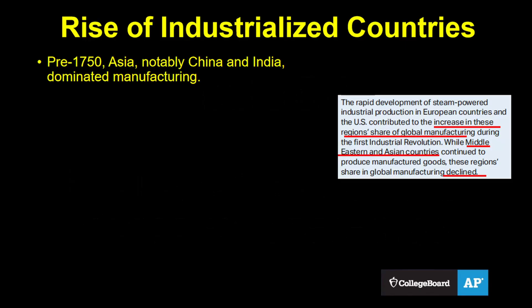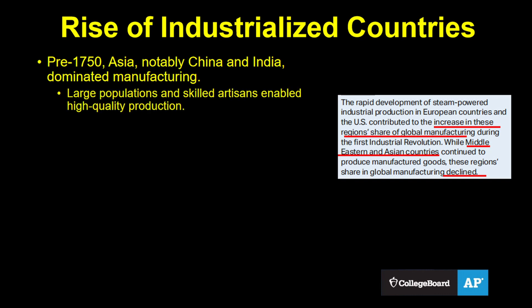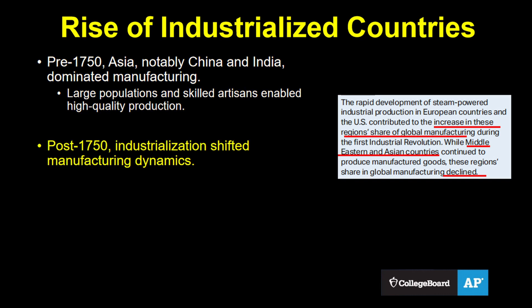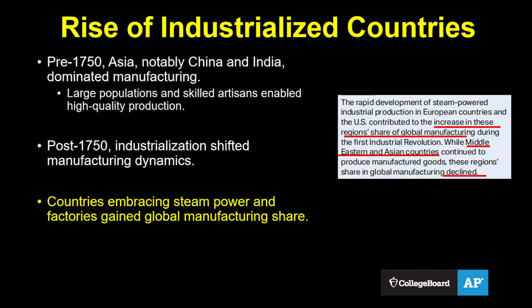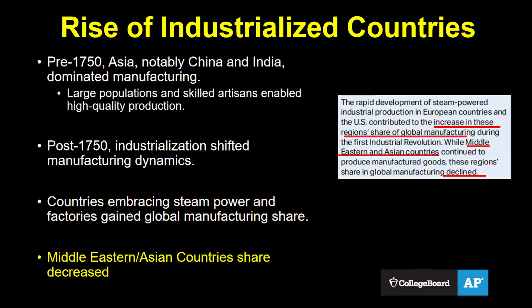This takes us to 5.4, which is about the share of global manufacturing. Before 1750, the largest production of manufactured goods occurred in Asia, particularly China and India. These societies had large populations and long traditions of production from skilled artisans, meaning they had always produced high quality products at a larger scale than was possible for others. But after 1750, this began to change. Countries that were able to make use of the extreme gains in efficiency from steam power and the factory system saw their share of global manufacturing increase. Those who did not saw their share decrease. It was now a case of the industrialized countries versus the non-industrialized countries.